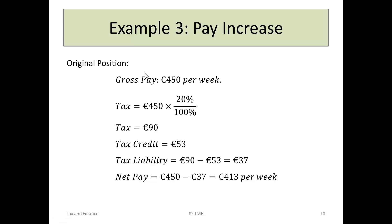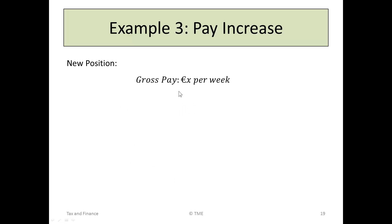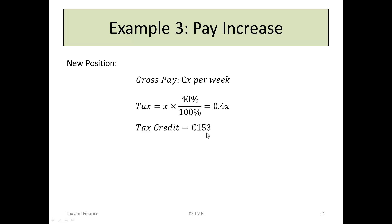Back to the original position: he was on €450 per week, 20% tax, giving tax of €90, with a tax credit of €53 — a total tax liability of €37. He was originally on €450 minus €37, or €413 per week. Now we don't know his new gross pay, so let's call that X. The new tax rate is 40%, or 0.4, so his new tax bill is 0.4X. With a tax credit of €153, his tax liability is 0.4X minus €153.